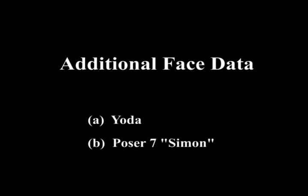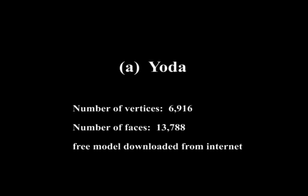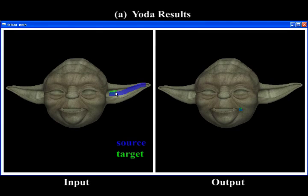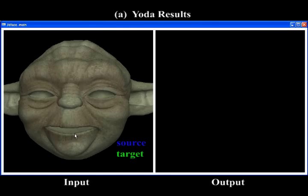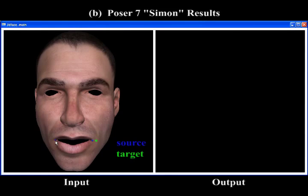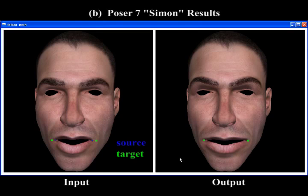We show that our system works with additional types of face data. The user can edit the 3D Yoda model with a few simple strokes drawn on the 2D screen. We also show that our system works with a face model from the Poser7 software system. The model and texture here are directly exported from Poser7.